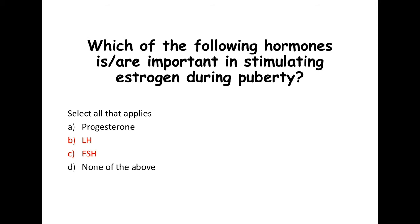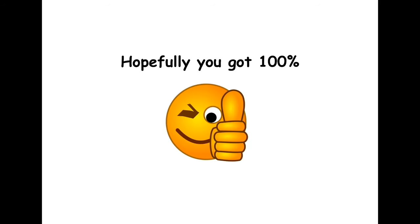Which of the following hormones are important in stimulating estrogen during puberty? The choices are progesterone, luteinizing hormone, follicle-stimulating hormone, or none of the above. If you selected luteinizing hormone and follicle-stimulating hormone, you're correct. We have two phases in the ovarian cycle — the follicular phase and the luteal phase — and LH and FSH help produce estrogen and assist with the production of the egg. Hopefully you got 100% on the quiz.